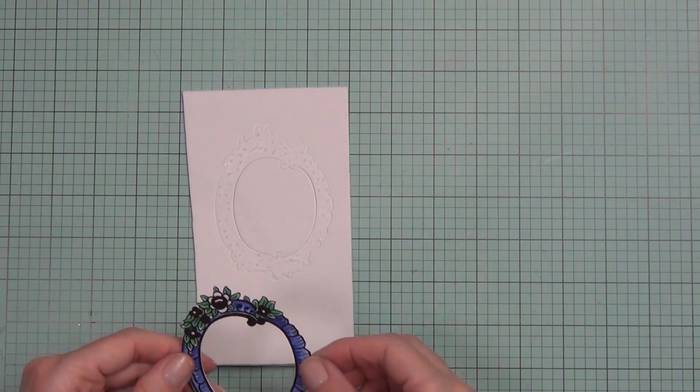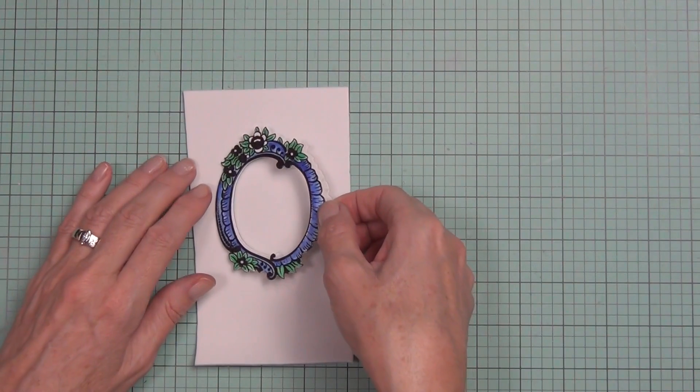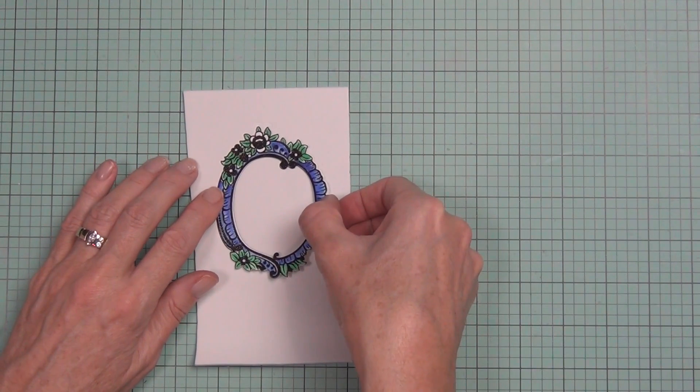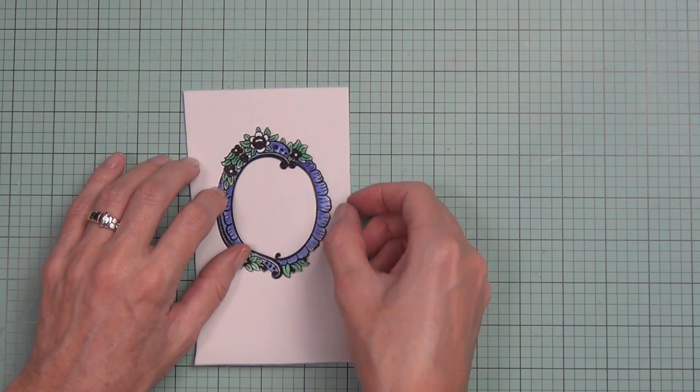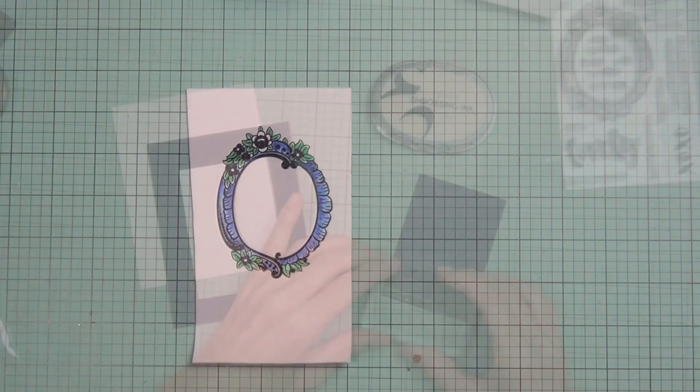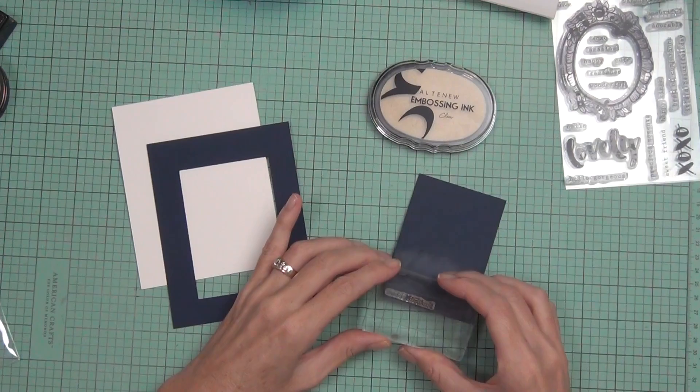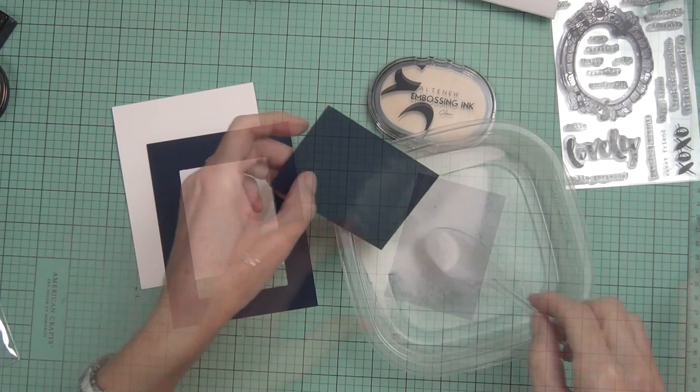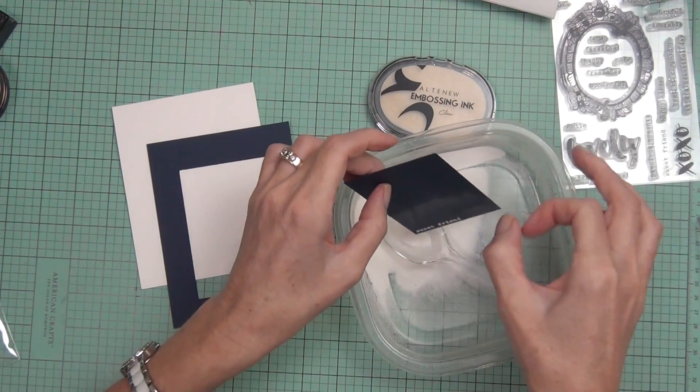I've die cut it again out of some fun foam and just use my matte medium to hold that in place while I line up my die over top. That way I know the foam is not going to lose shape. I set that aside to dry.